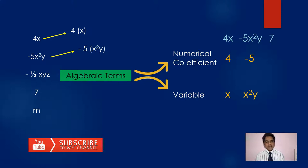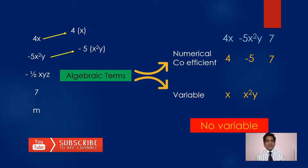Consider the term 7 — there is no variable. So here 7 is the numerical coefficient. Whenever there is no variable, you can take it as x power 0, y power 0, or z power 0. Actually there is only a constant here — there is no variable. But it is still a term.